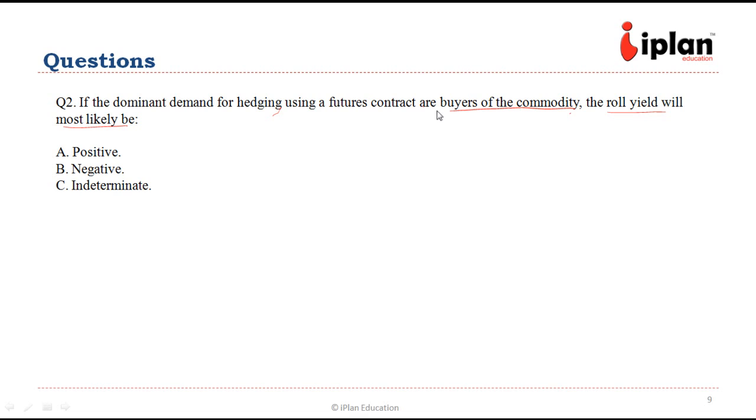Here, since buyers of the commodity are the ones dominantly buying the futures contracts, the future price is going to be higher because of more demand than the spot price. When futures are more than spot price, we know that is a situation of contango.